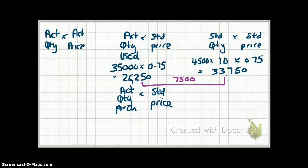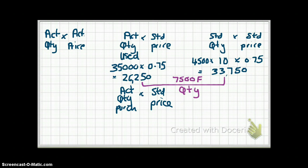The quantity variance is $7,500. We expected $33,750, but actual cost was $26,250 — less than expected. Therefore it is a favorable variance. This is your direct material quantity variance.